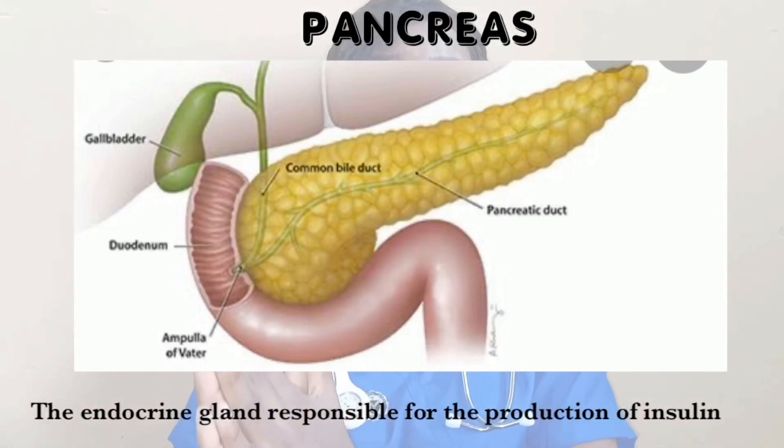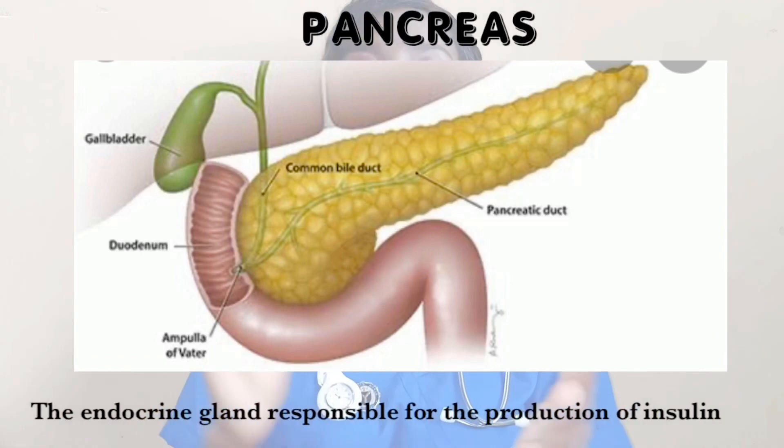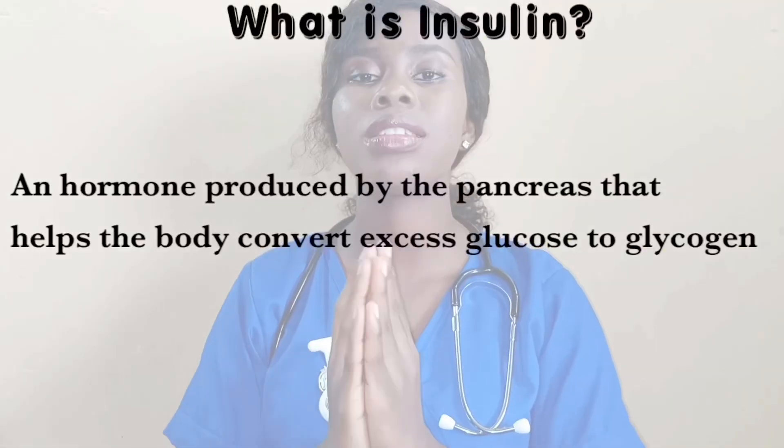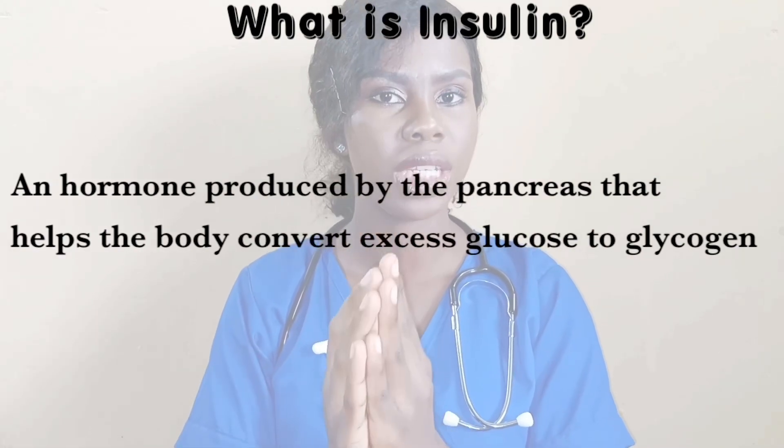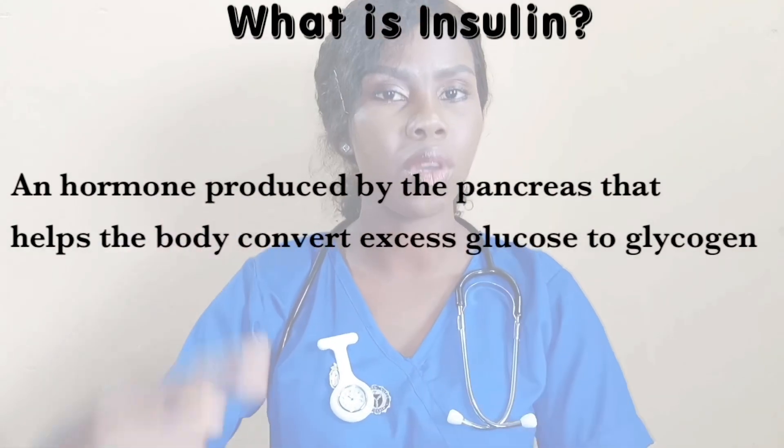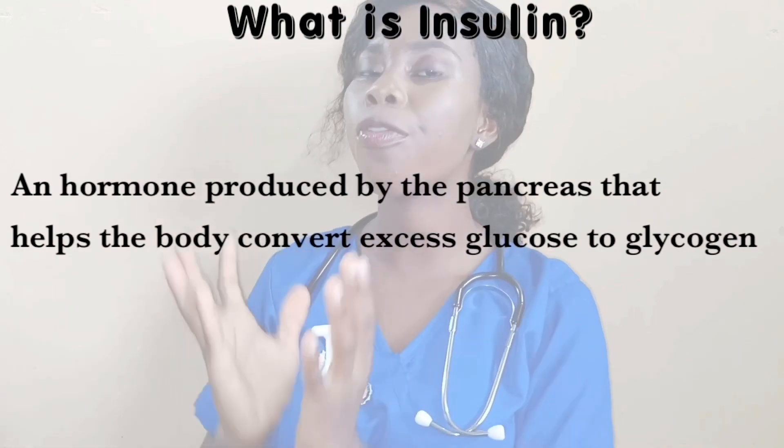Let's move into anatomy and physiology a little bit. In your body, there is something called the pancreas. The pancreas has some cells known as the alpha and beta cells of Langerhans. One of these cells produces what is called insulin. Insulin is a hormone targeted towards reducing the level of glucose in your body. It converts excess glucose in the blood to glycogen, which is a storable form of glucose. When stored as glycogen, your body can keep it, and when there is little glucose in the blood and your body needs more, it is converted back into glucose by another hormone known as glucagon.